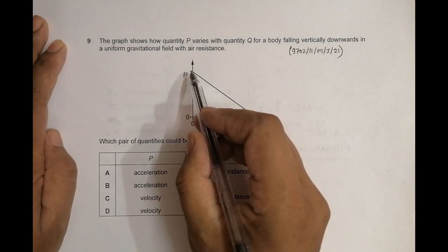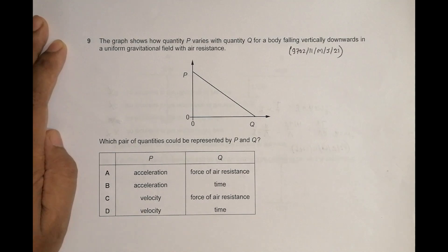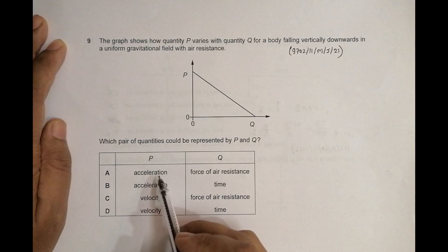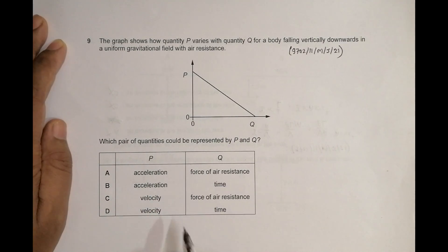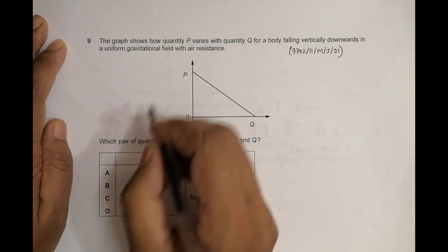We have a straight line with uniform negative slope, so we have to guess which one this is. Let's first see the choices: acceleration and force of air resistance, acceleration and time, velocity and time, velocity and force of resistance.